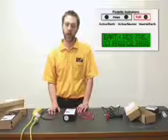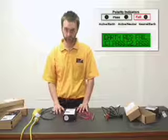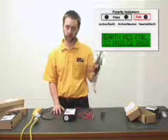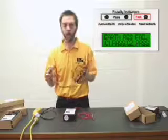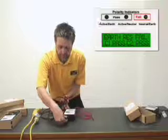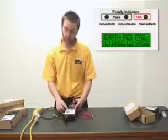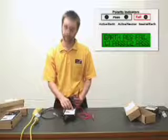I am now going to test class one equipment or earthed appliances using the Easy Test Duo. Here is a soldering iron, an example of class one equipment. All I have to do is plug it into the Easy Test Duo. Instantly, the Easy Test Duo is checking for earth leakage, with the result being displayed at the bottom of the LCD screen.